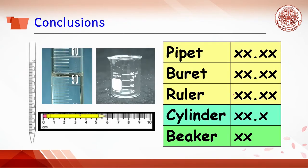This table concludes the reading of measuring devices based on the significant figure rule. Burette and pipette give the most accurate reading with two decimal places. The cylinder gives less accurate reading with only one decimal place. The beaker gives the least accuracy with no decimal place, so it is used only for approximate measurement.